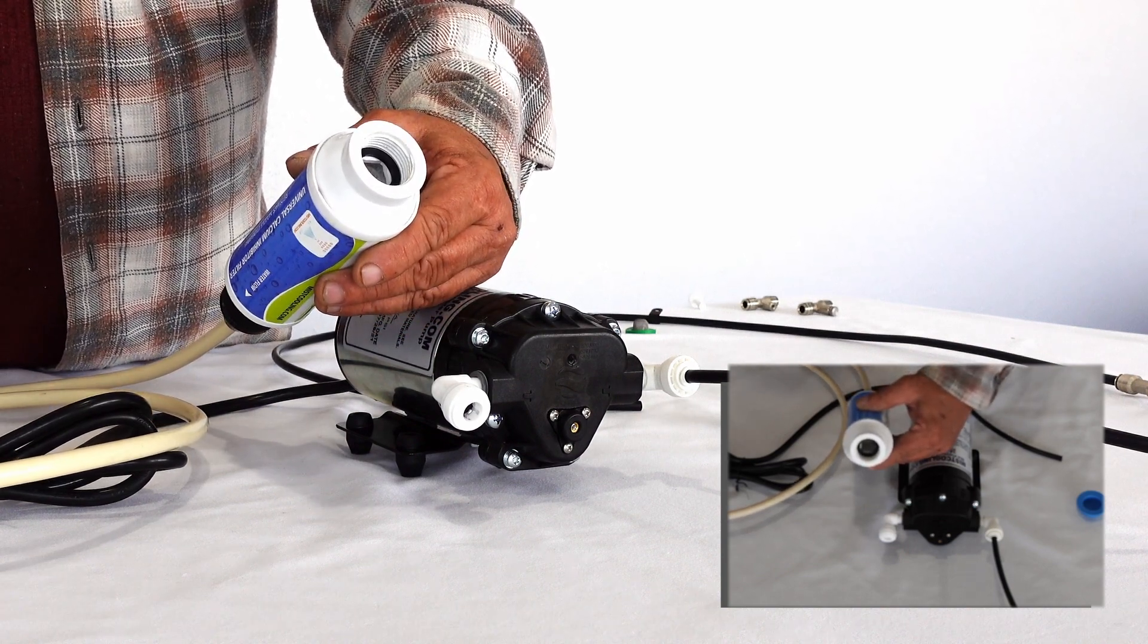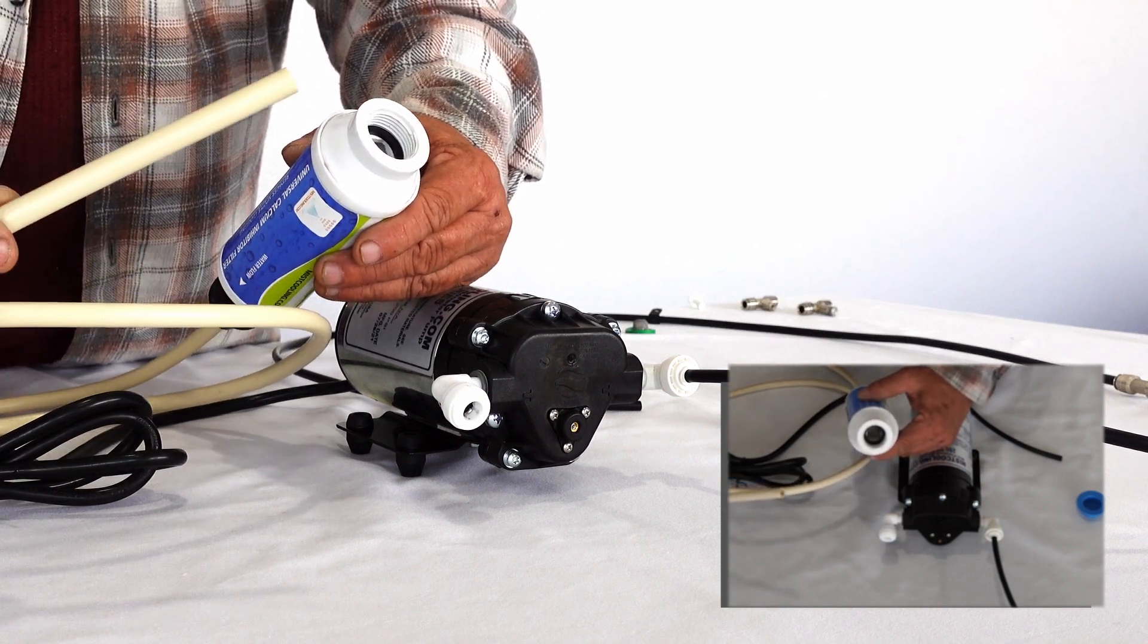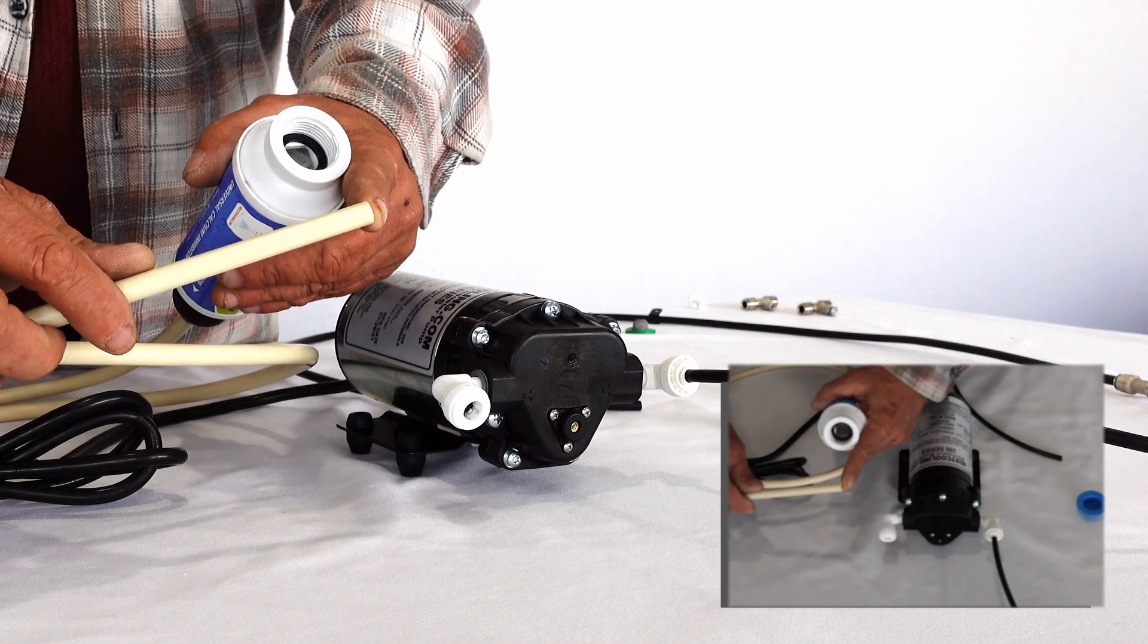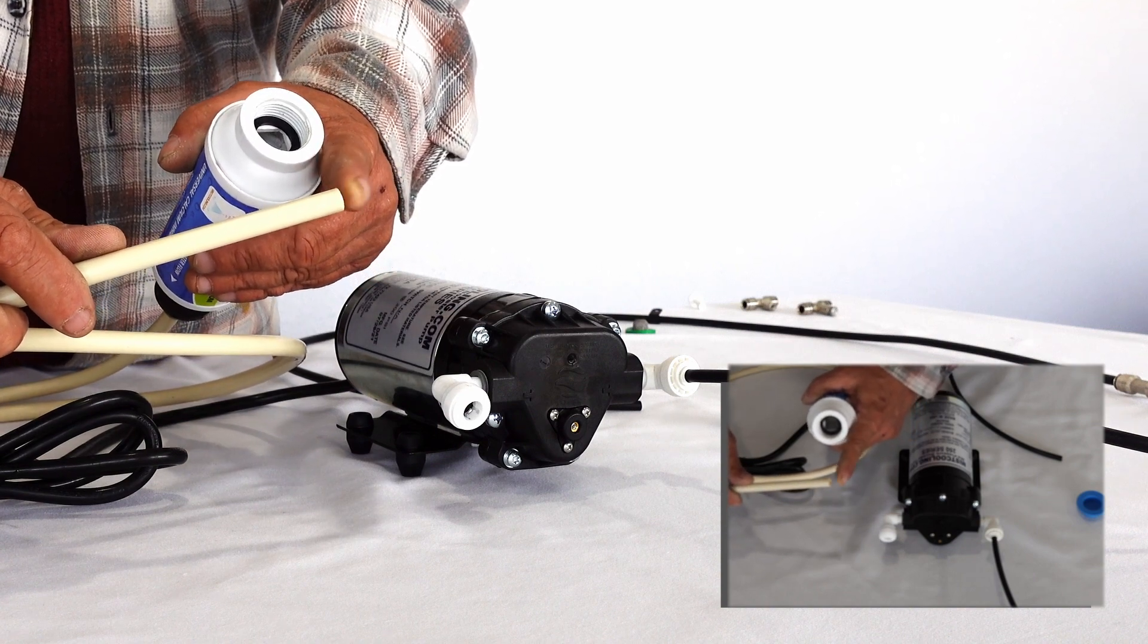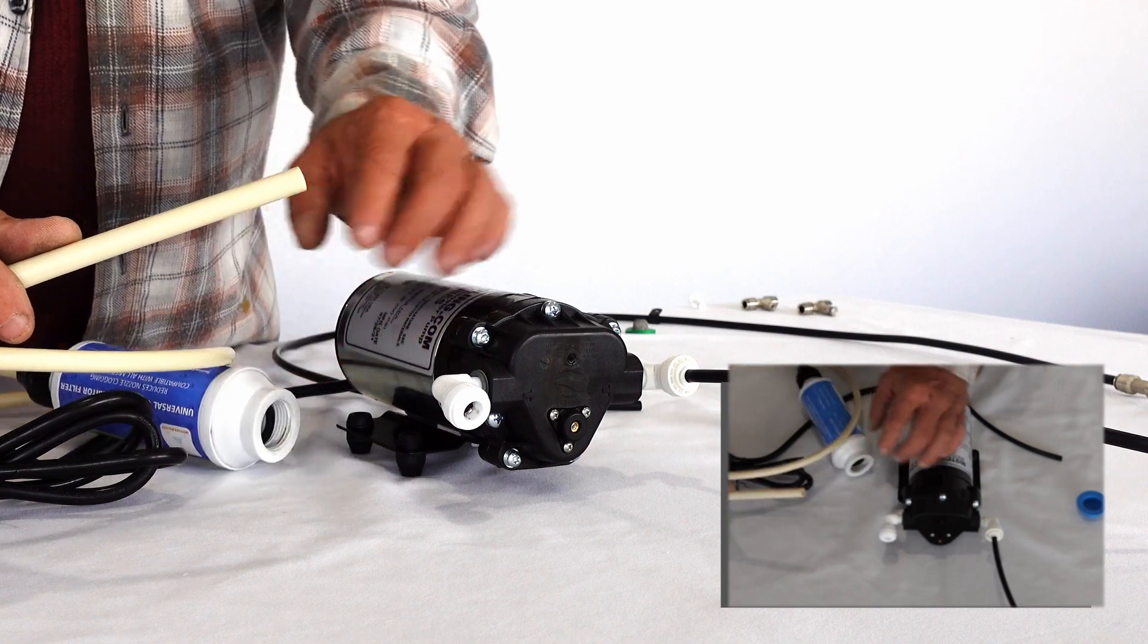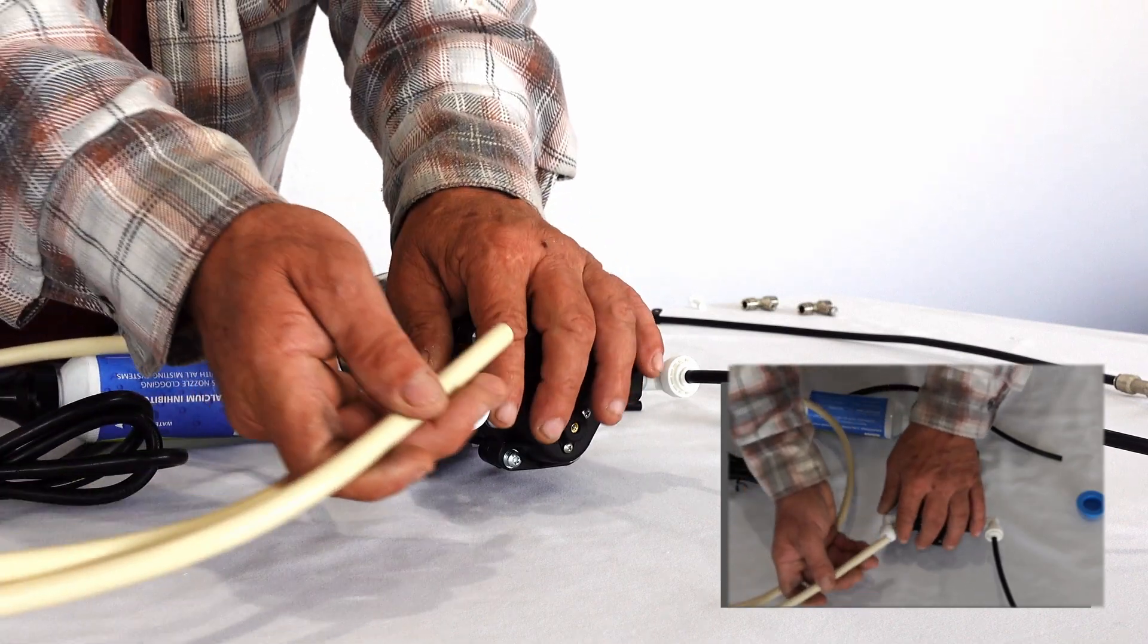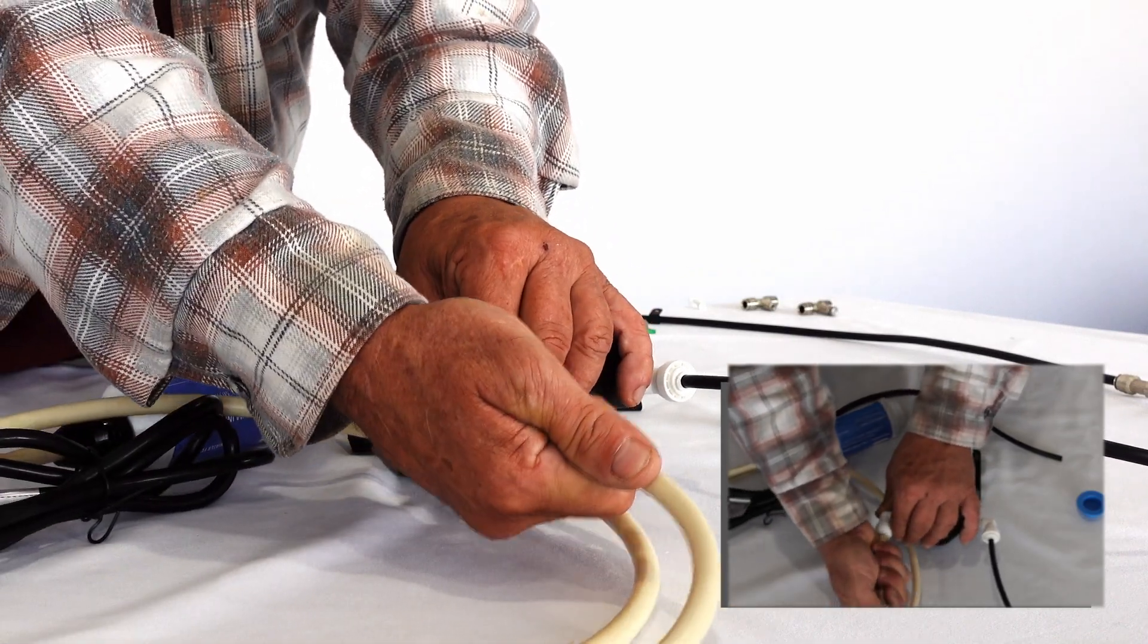Once you screw this onto your water spigot, you will want to turn the water on and flush this line out until you have solid water coming out of here with no air. Once you have solid water you can turn your water off and push this into the inlet fitting.